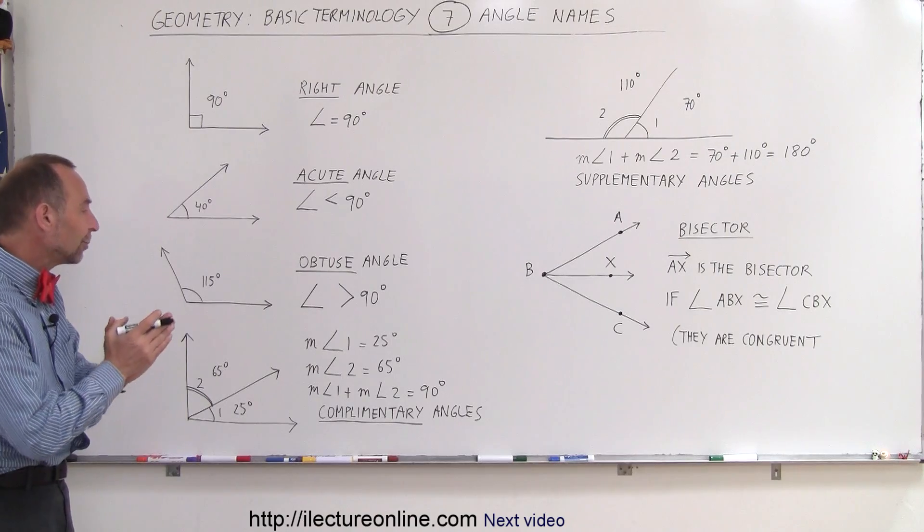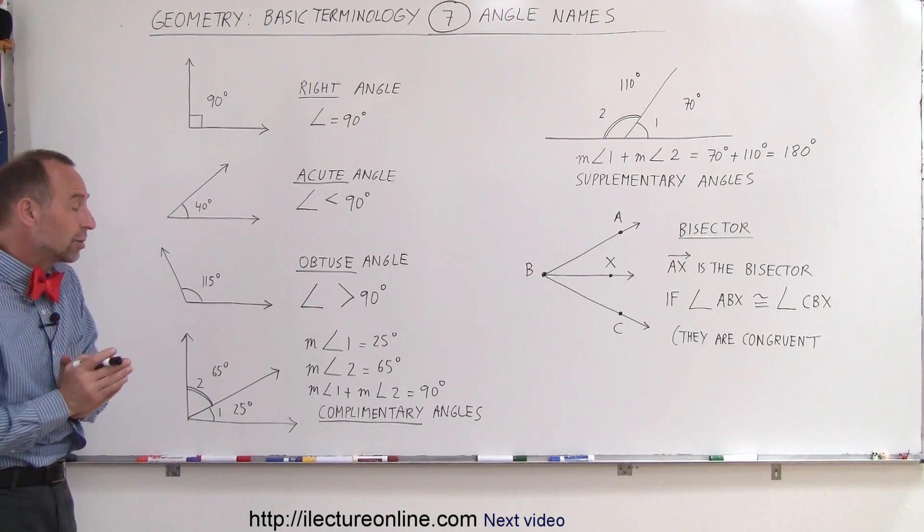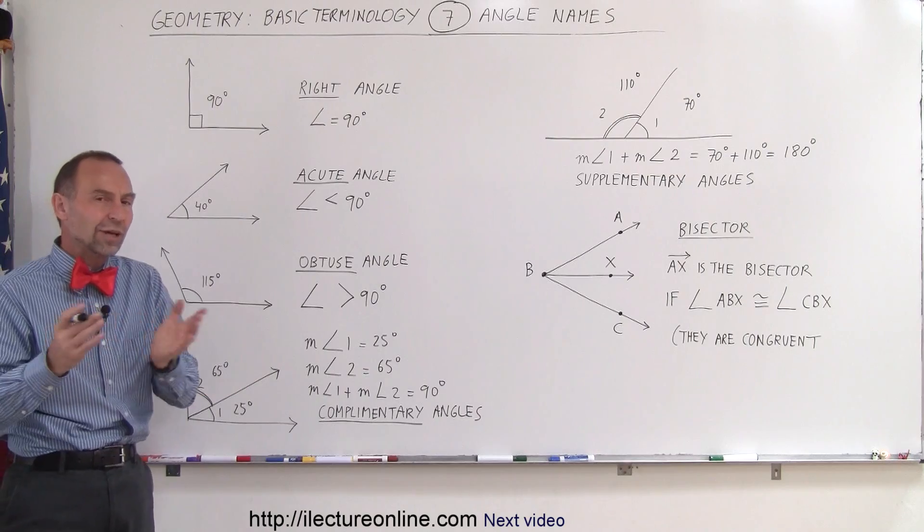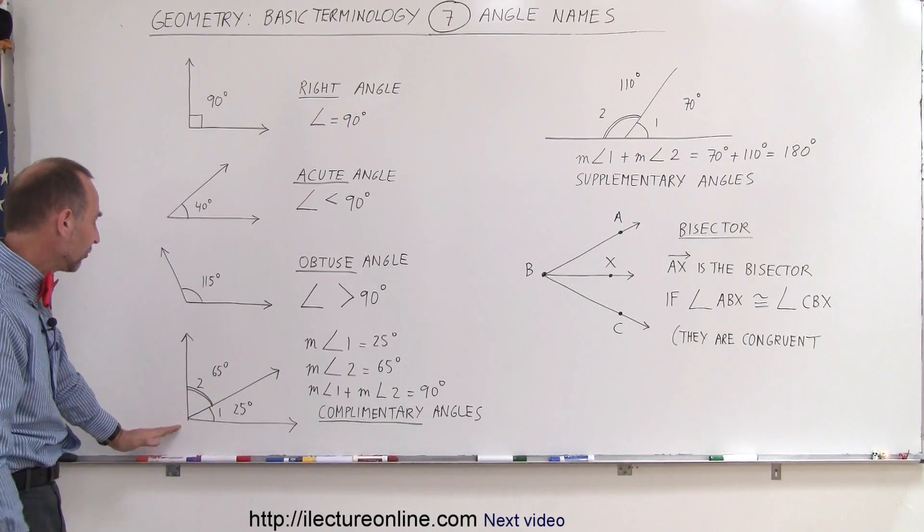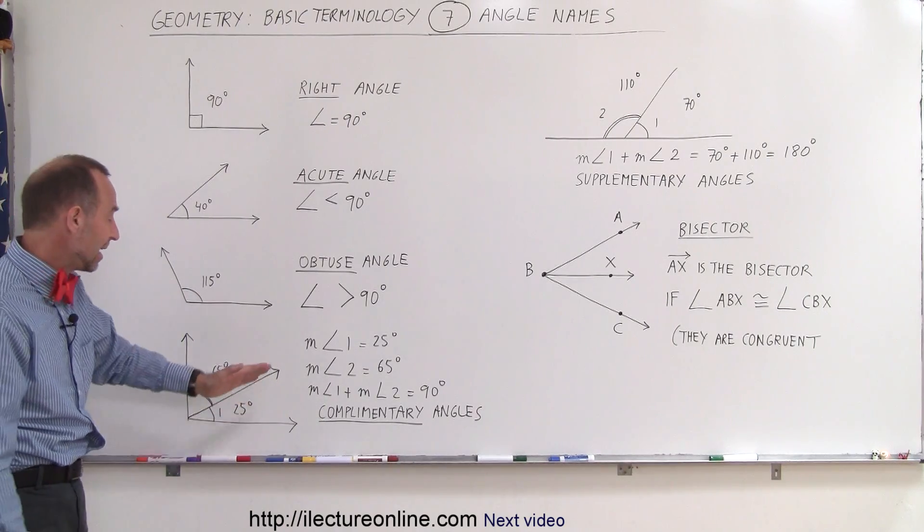When we add them together, that adds up to 90 degrees. Those are called complementary angles. Anytime two angles add up to 90 degrees, they're called complementary angles. And of course, they must share a common side.